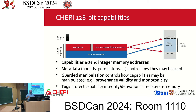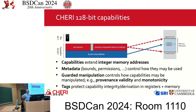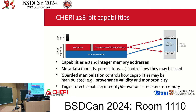In a CHERI system, all accesses to memory — both loads and stores — as well as jumps or any control flow operation is via a capability. Either in a compatibility mode, where that's implicit via a default data capability and program counter capability which you can ignore completely in legacy code, or explicit, where you're using explicit capability operations for everything and using exactly the capability you need, implementing release privilege and intentionality.